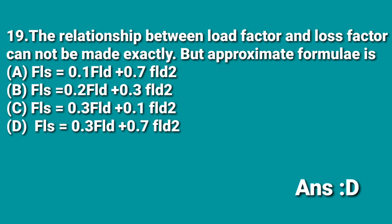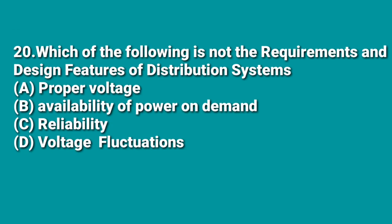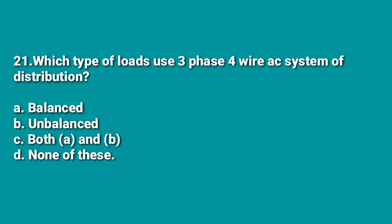The next question: which of the following is NOT a requirement or design feature of a good distribution system? A: proper voltage, B: availability to power and demand, C: reliability, D: voltage fluctuations. Voltage fluctuations must be minimum, so D is not a requirement — the answer is D. The following question: which type of load uses the 3-phase 4-wire AC distribution system? The 3-phase 4-wire system is mostly used for unbalanced load conditions, so B is the answer.